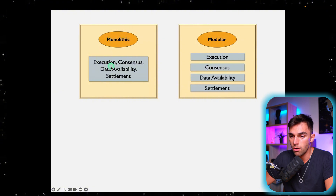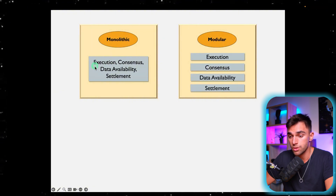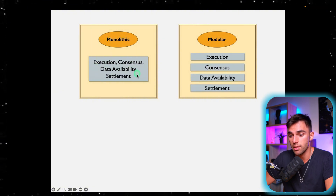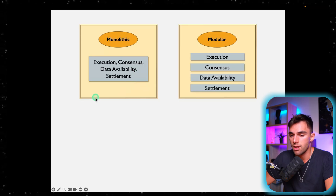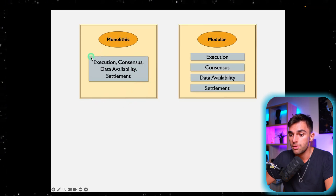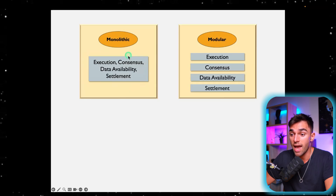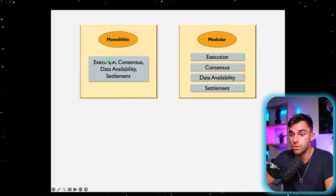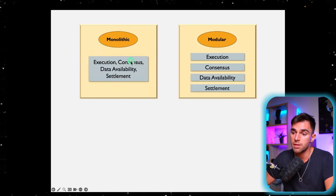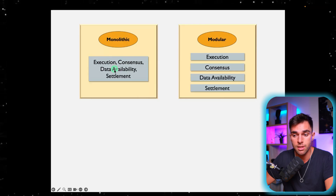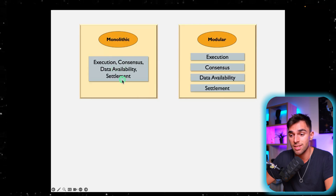The components of the blockchain are execution, consensus, data availability, and settlement. In a monolithic blockchain, the main blockchain handles all of these functions. The nodes of the blockchain will do the execution, the consensus, data availability, and the settlement.